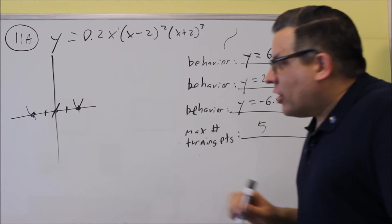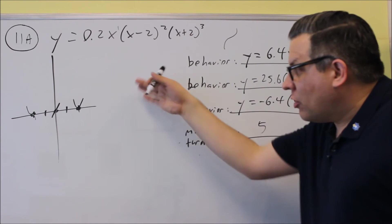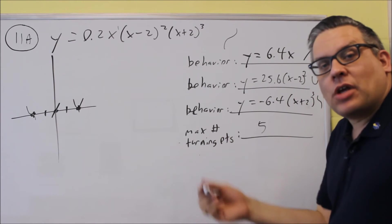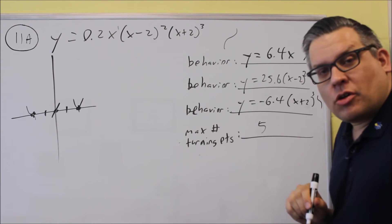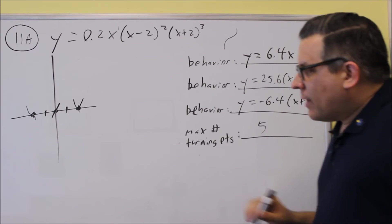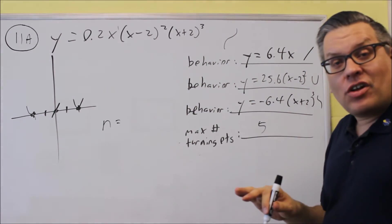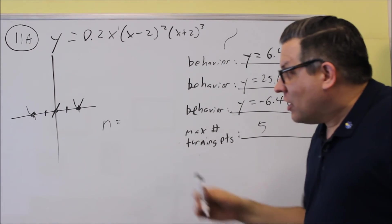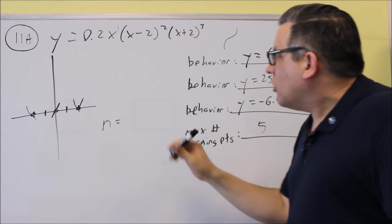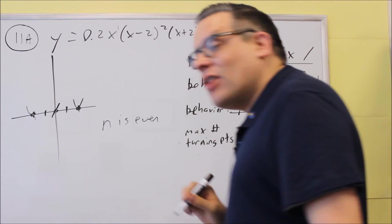Now for the rest of it, something that I didn't ask you for in the test, but something you also want to need to know in order to graph these is talking about those end behavior models. So I talked about those earlier in the lecture notes for this particular section. We talked about whether your degree is odd or even and if that leading coefficient is positive or negative.